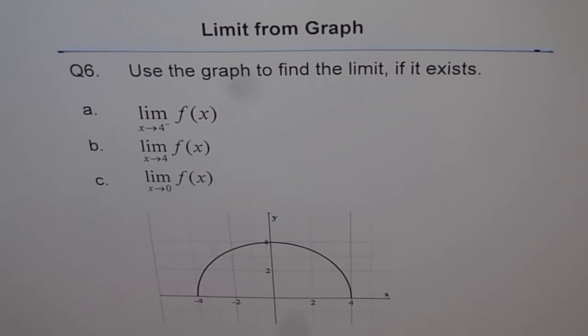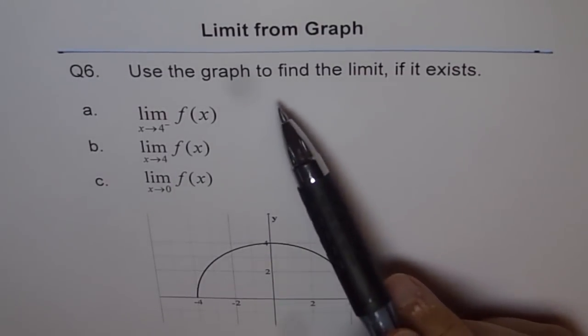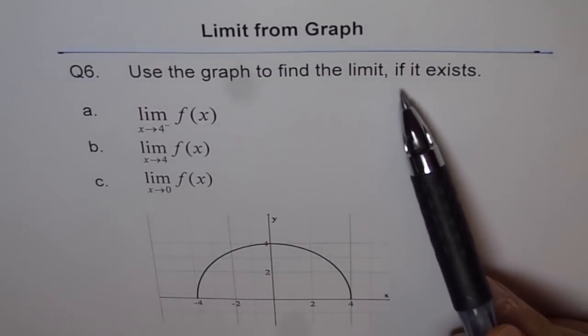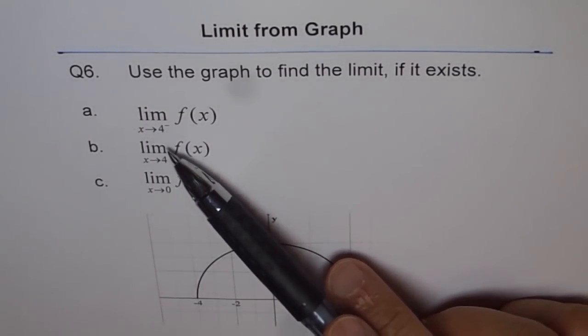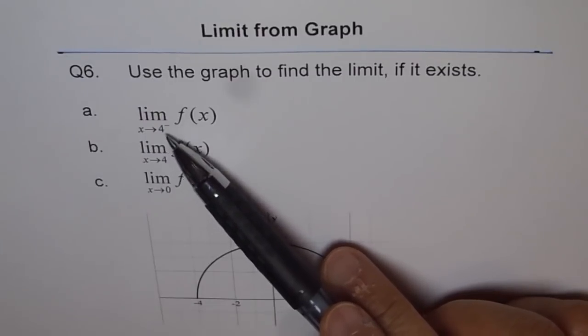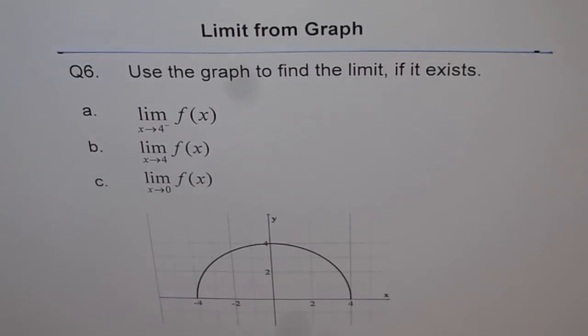Limit from graph, question 6: Use the graph to find the limit if it exists. Part a: limit of f(x) when x approaches 4 from the left (4 minus). Let's look at the graph. This is our semicircle and we're trying to approach 4 from the left side. If you're trying to approach 4 from the left side, you approach 0.